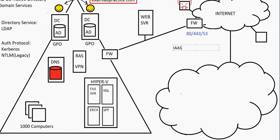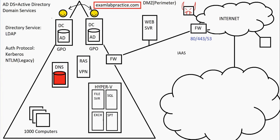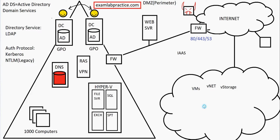Infrastructure as a Service means the cloud provider is offering their infrastructure for a fee as a service. Instead of having to host your virtual machines on-premise, you can pay a cloud company to host virtual machines for you. They can also host a virtual network, storage, virtual firewalls on those virtual networks, and virtual load balancers.